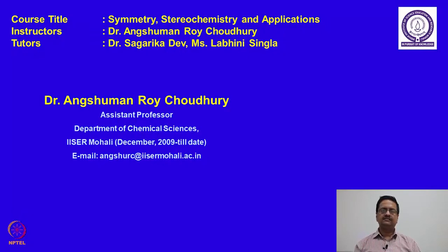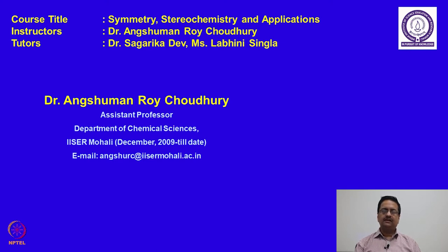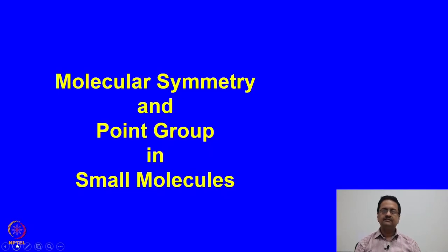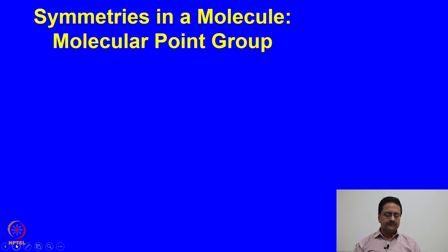Welcome back to the course on Symmetry, Stereochemistry and Applications. In the previous two lectures, we have tried to understand the various symmetry elements that a molecule can have and we have tried to show you how you can find out different symmetry elements present in a given molecule. We try to identify those symmetries using some name, and that name is called the molecular point group.